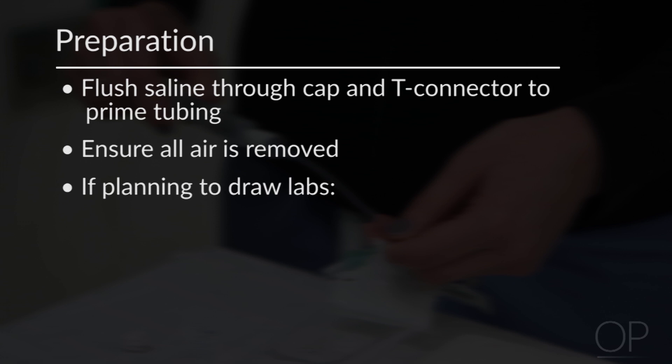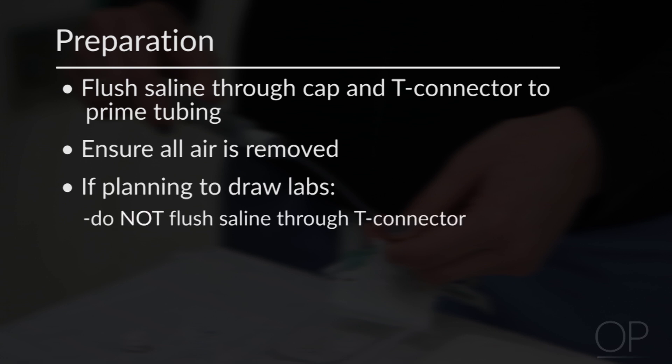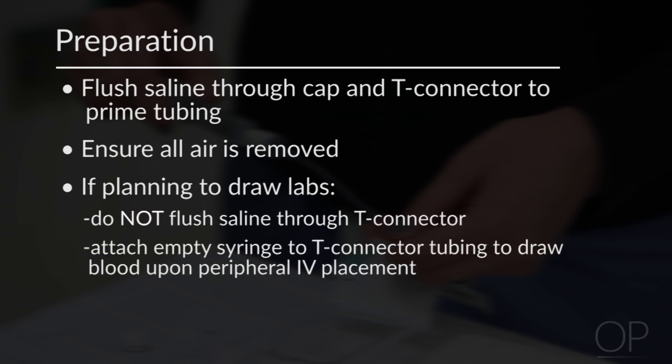If you plan to draw labs upon placement of the peripheral IV, do not flush saline through the connector. Instead, attach an empty syringe to the T-connector or extension tubing so that you can withdraw blood upon placement of the catheter into the patient's vein.